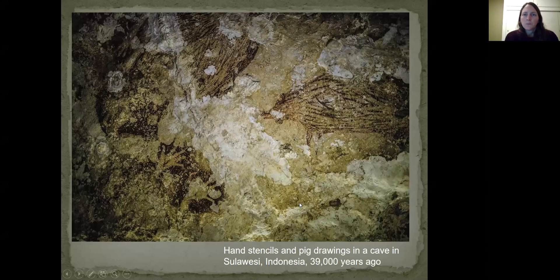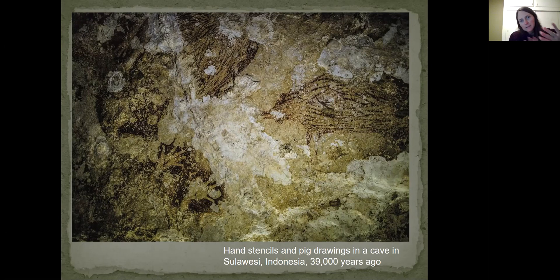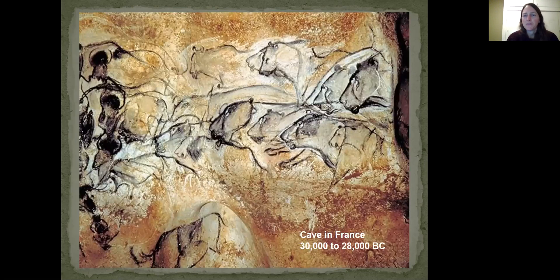Here we have what they think is one of the oldest cave paintings from Sulawesi, Indonesia, about 39,000 years ago. It's a little bit hard to see, but there are stencils of hands down in the bottom left and then some images of some pigs in the upper right hand corner. This is much older than this cave in France, where you can see just some really neat gesture drawings of maybe lions or a bear, thought to be about 30,000 to 28,000 BC.